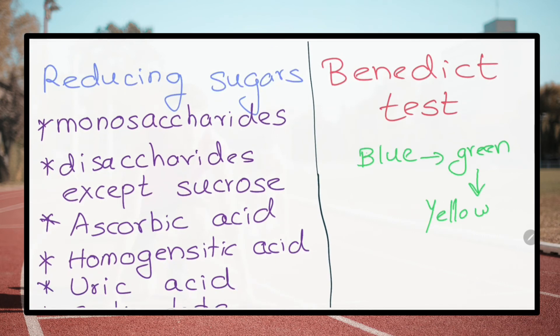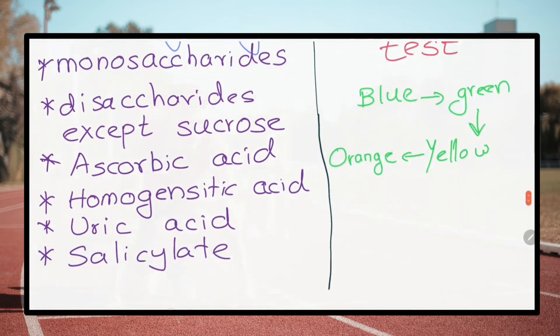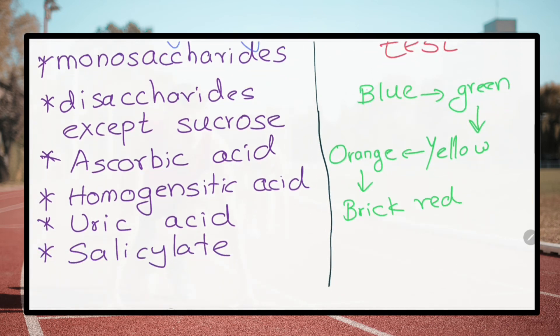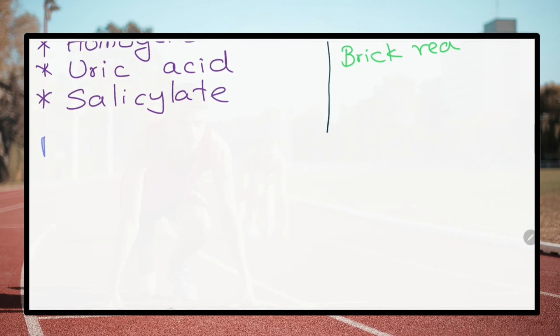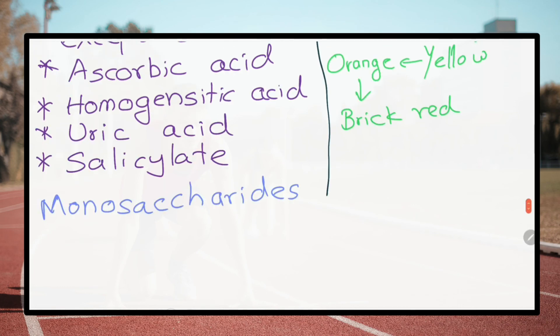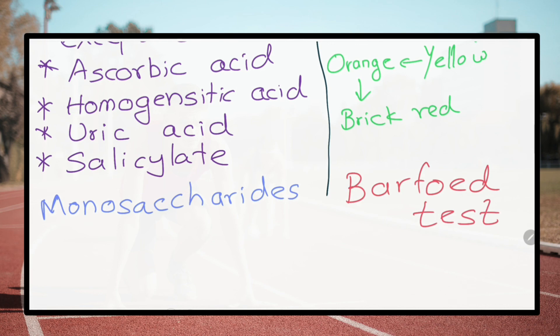What is the color change that occurs in the Benedict test? First blue, then green, then yellow, then orange, and finally brick red. What is a specific test to identify monosaccharides? Barfoed's test.